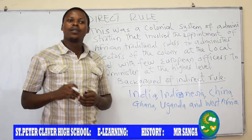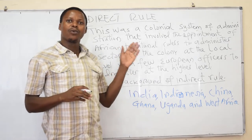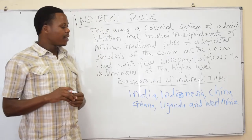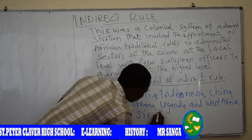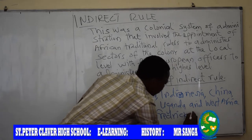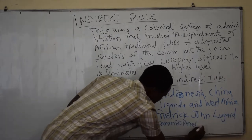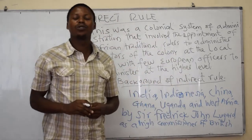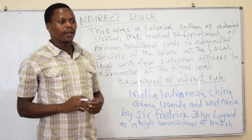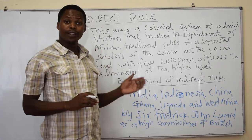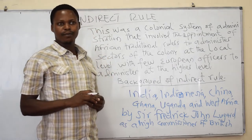In Africa, Indirect Rule was introduced firstly in West Africa, especially the northern part of Nigeria, when they were resistant against the colonial rule. The Indirect Rule in Nigeria was introduced by Sir Frederick John Lugard as the High Commissioner of the British, in 1900, when they resisted against the imposition of Indirect Rule in the northern part of West Africa.